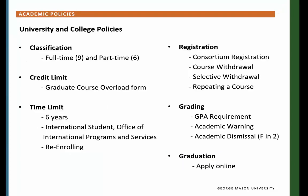Academic Policies. I will now go over the university and college policies. Classification: a graduate student is considered full-time if enrolled in nine credits and part-time if enrolled in six credits. Credit Limit: graduate students may enroll in a maximum of 12 credit hours per semester. If you wish to enroll in additional hours, you must first obtain permission from the Global Affairs program and then complete a graduate course overload request form. Time Limit: master's degree students have six years from the time of first enrollment as a degree-seeking student to complete their degrees. If you are an international student on an F1 or J1 visa, you will have more restricted time limits and should contact the Office of International Programs and Services. If you fail to enroll in at least one credit of coursework for two or more consecutive semesters, you will need to complete the graduate application for re-enrollment form, approved and signed by the Global Affairs program. Note that the six-year time limit does not reset.